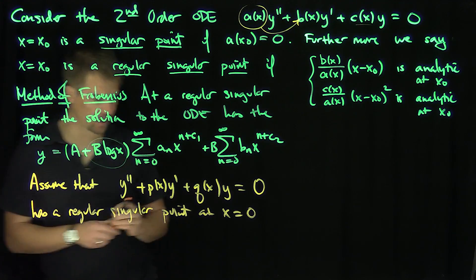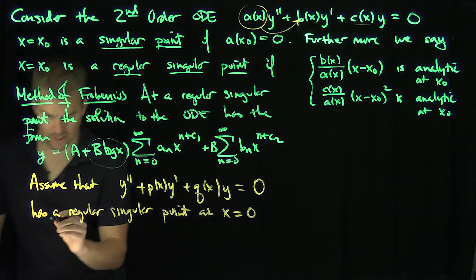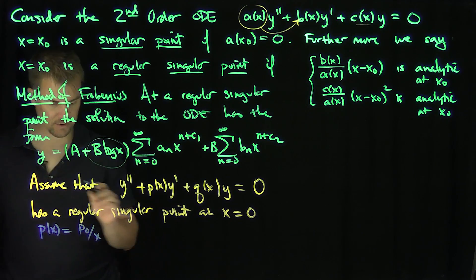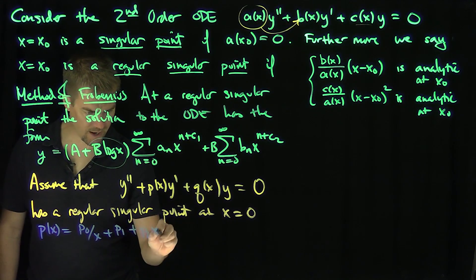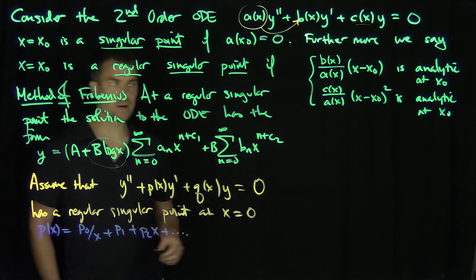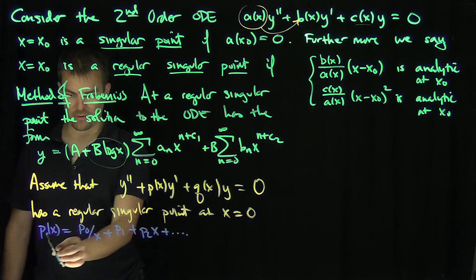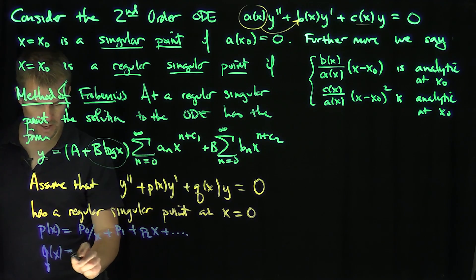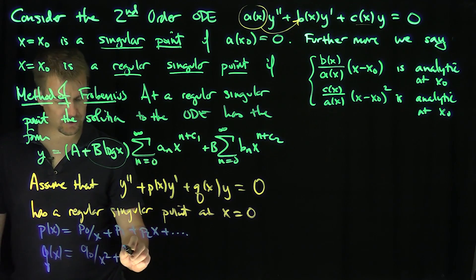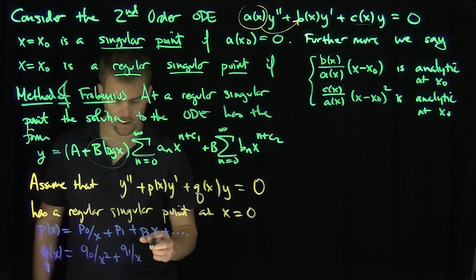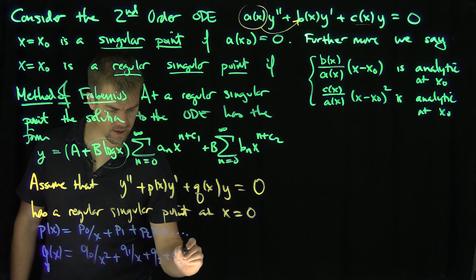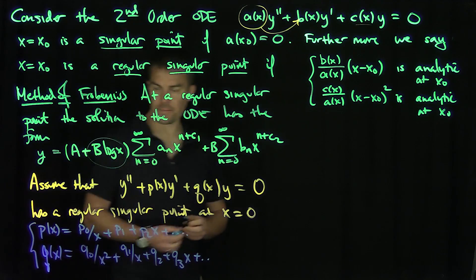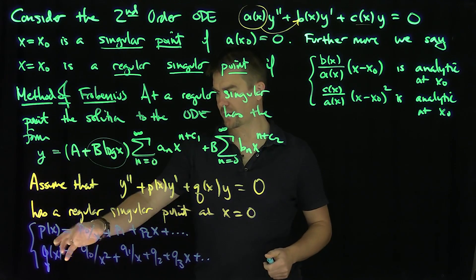If there is a regular singular point at x = 0, we can write p(x) = p₀/x + p₁ + p₂x + ⋯, because x·p(x) is a power series, so dividing by x gives this Laurent expansion. Analogously, q(x) = q₀/x² + q₁/x + q₂ + q₃x + ⋯. These are the Laurent expansions of p and q. p₀ is called the residue of p at x = 0, and q₁ is called the residue of q at x = 0.